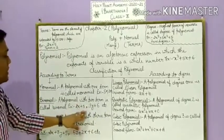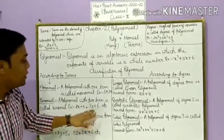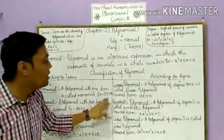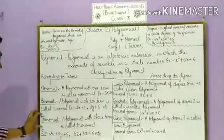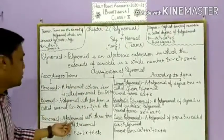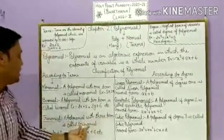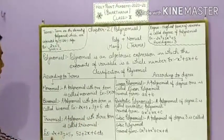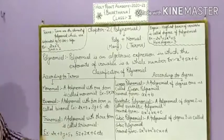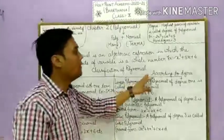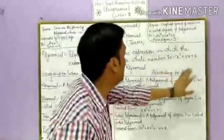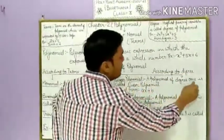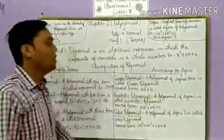Here there are two terms, so it is a binomial. A polynomial with three terms is called a trinomial.